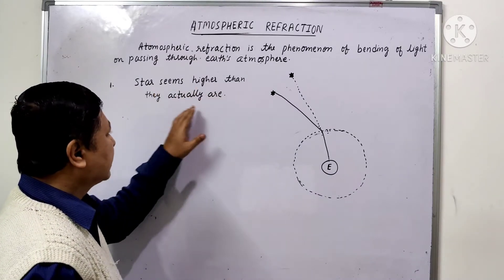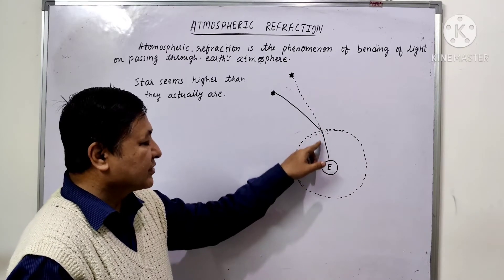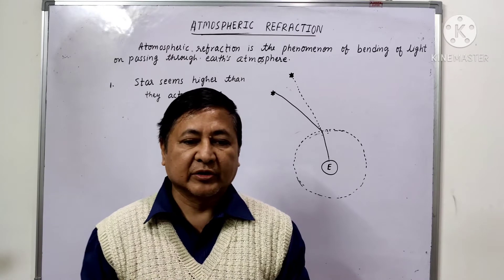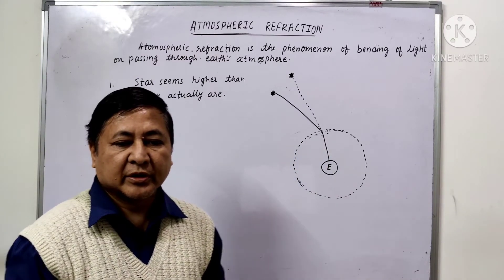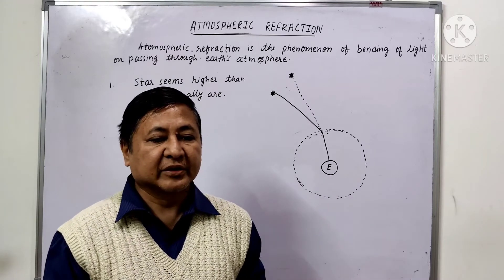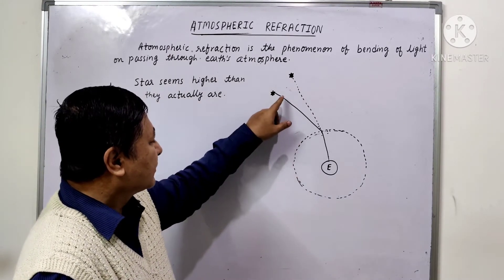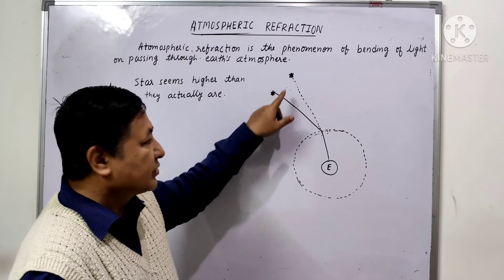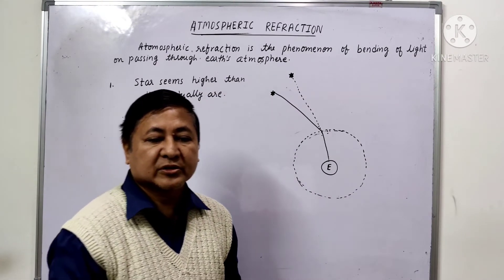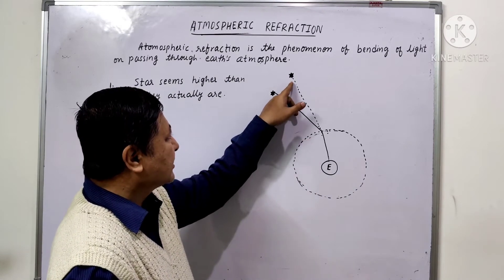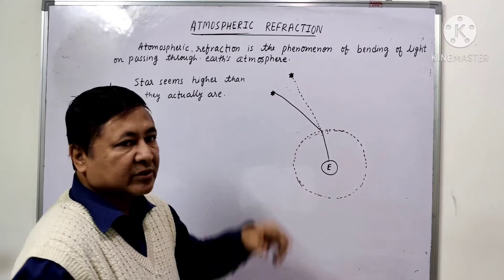The first phenomenon is that stars appear higher than they actually are. The starlight enters the earth's atmosphere and undergoes refraction continuously before it reaches the earth. The atmospheric refraction occurs in a medium of gradually changing refractive index. Since the atmosphere bends starlight towards the normal, the apparent position of the star is slightly higher than its actual position. The star appears slightly higher above than its actual position due to refraction.